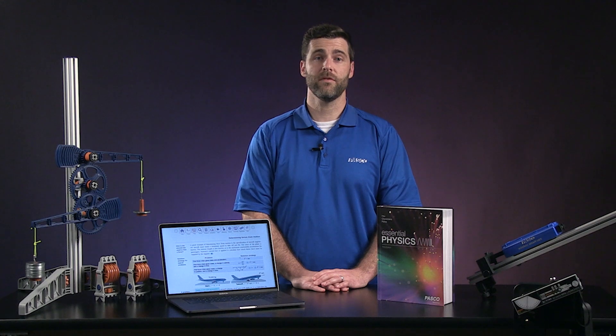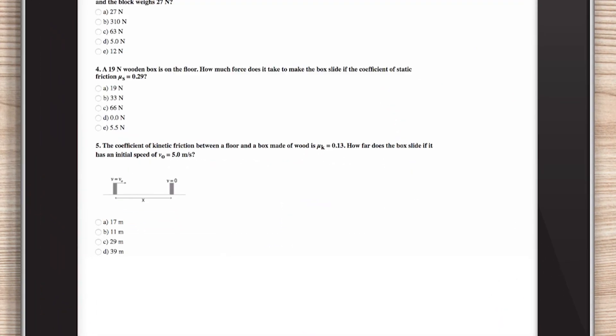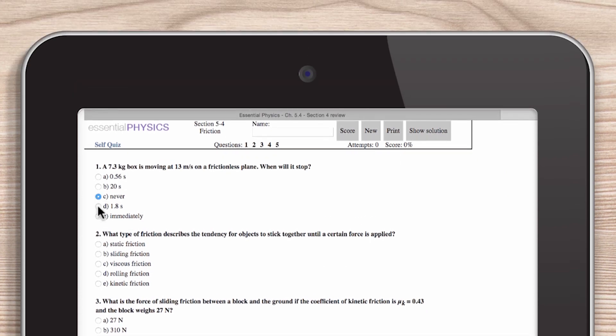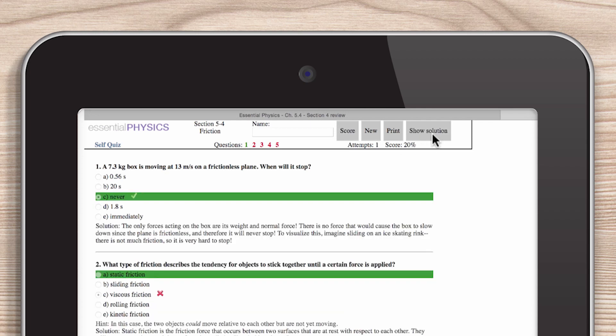At the bottom of each section review page is a Take a Quiz formative assessment. These quizzes are dynamically generated, and students can reset them to show new questions and solutions. This way, students can practice until they achieve mastery.